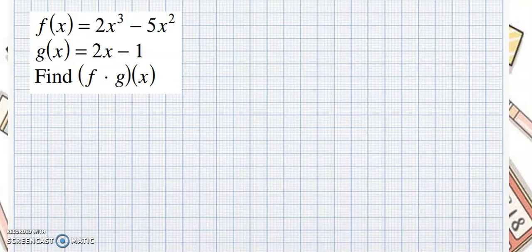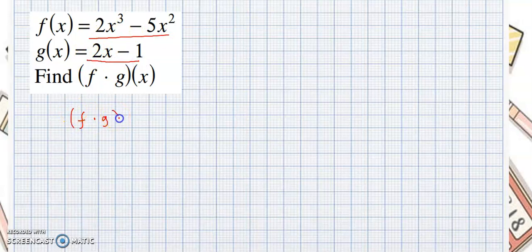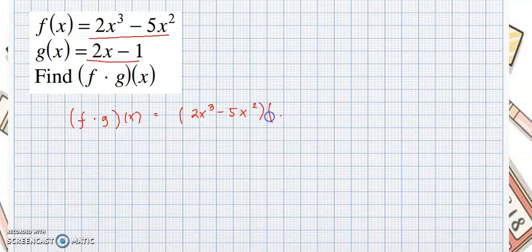So here, f of x is equal to 2x cubed minus 5x squared, and g of x is 2x minus 1. We wanted to know what is the value of f times g of x. Since we are doing multiplication, we need to put them inside parentheses. So f of x, which is 2x cubed minus 5x squared, is multiplied by 2x minus 1.